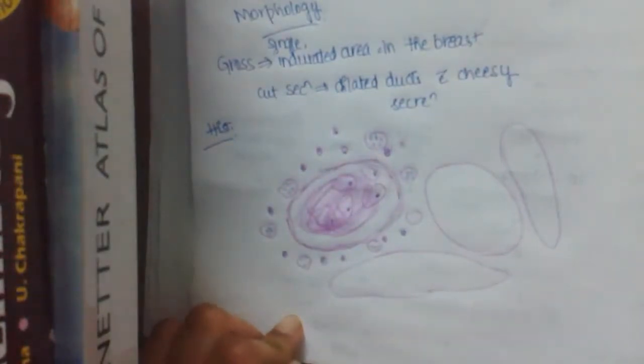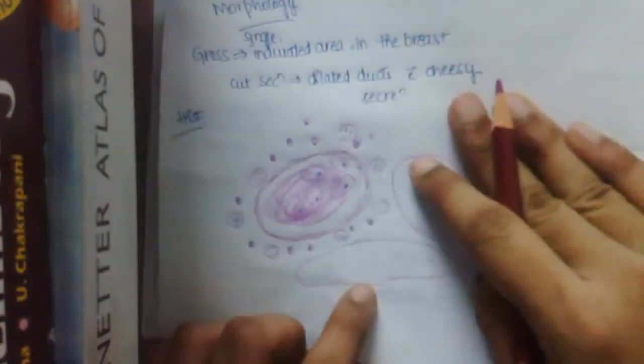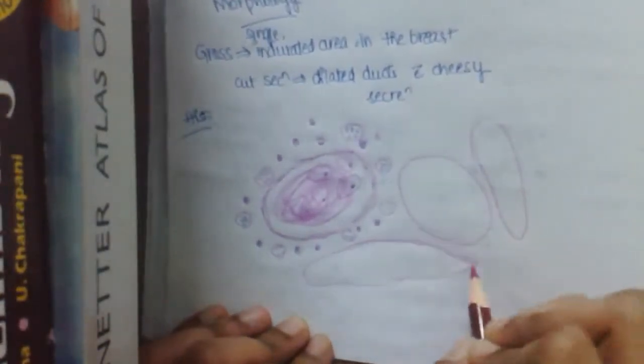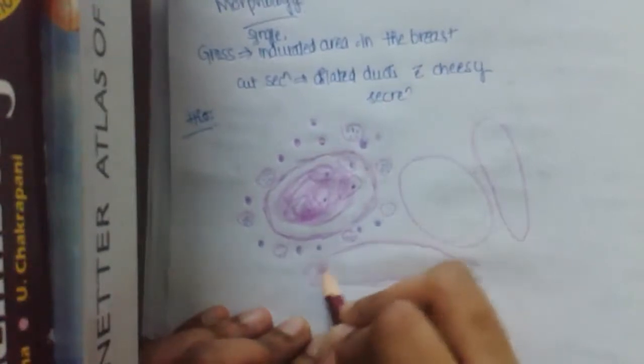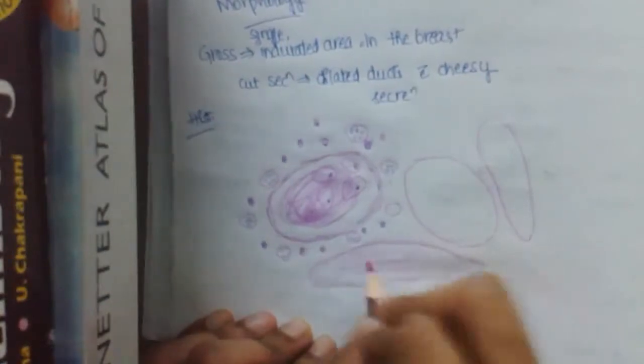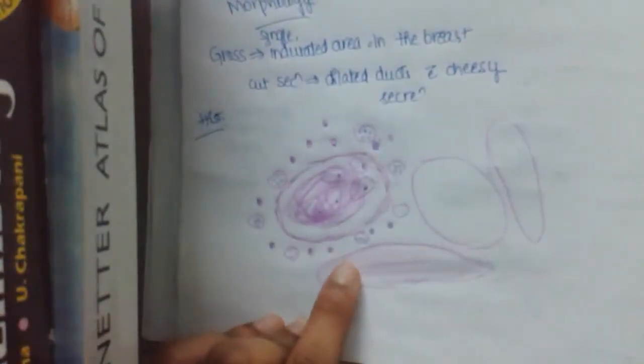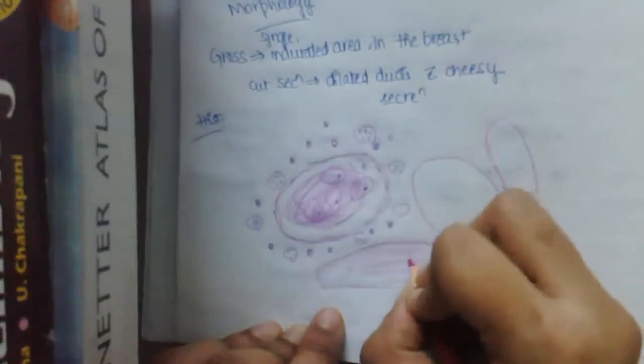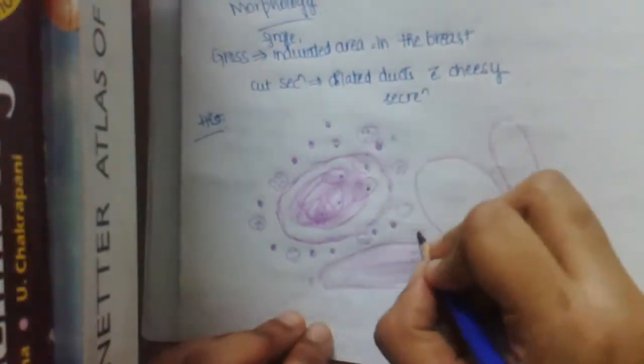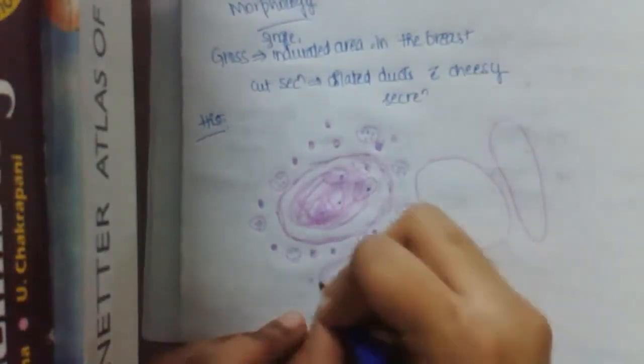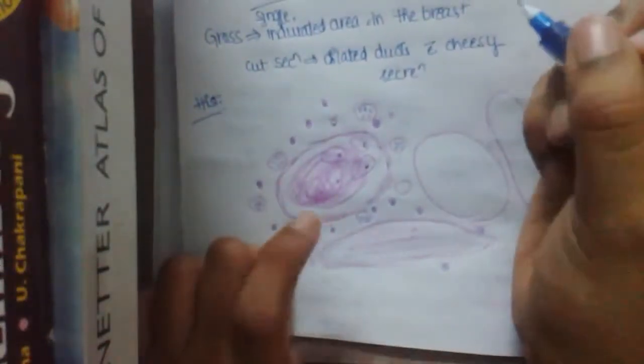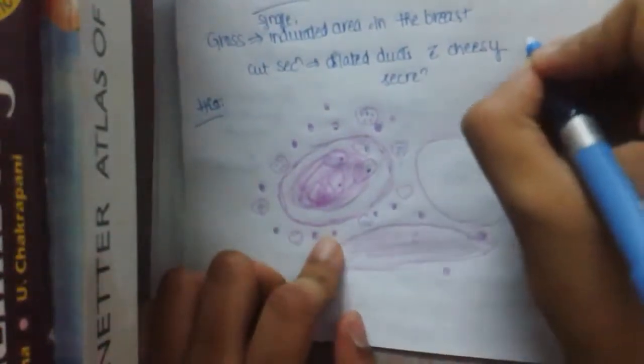And sometimes, there may be obliteration of ducts with fatty tissue. Just like this. So this is a flattened lining epithelium. And this is, see the duct is obliterated with fibrous tissue. So this is fibrous tissue with sometimes some amount of inflammation. This is what we see in mammary gland ectasia. So let us label all those things which are seen. There are mainly features.